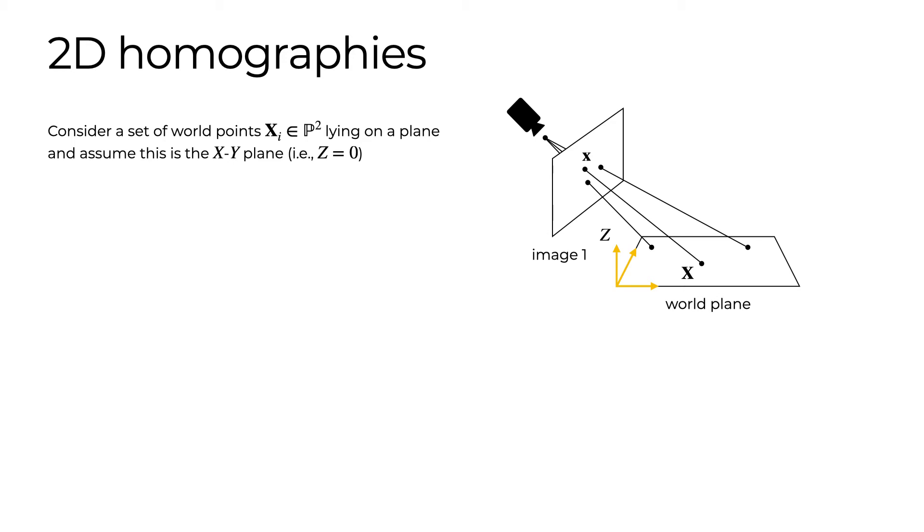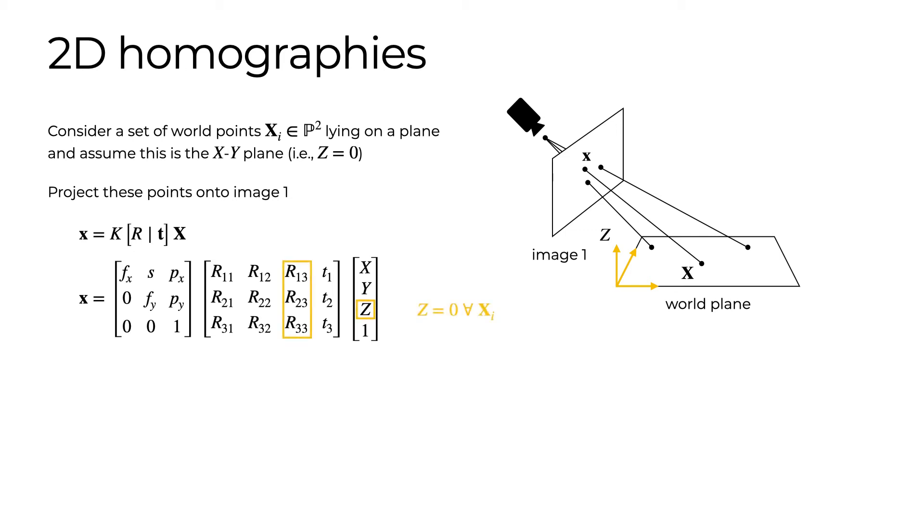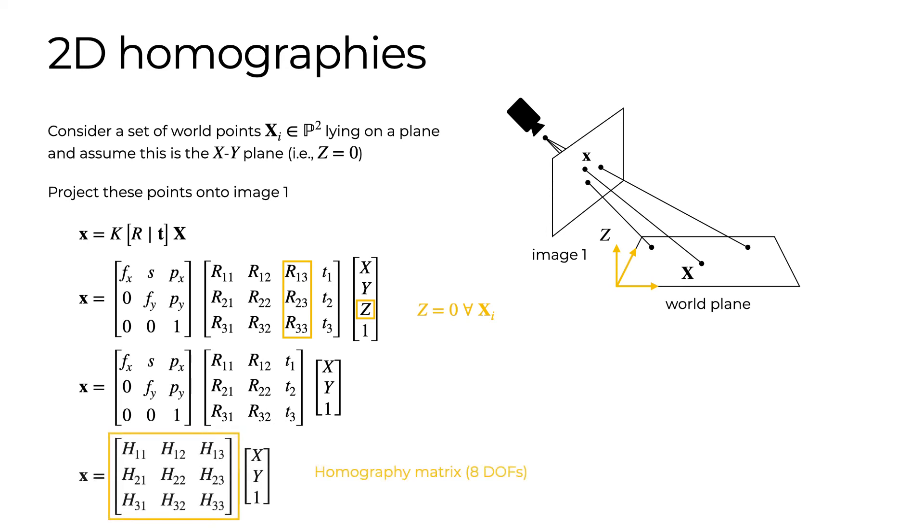As we have seen, the camera matrix relates the homogeneous coordinates of points in the world to their corresponding projection on the image plane. Since the world points lie on the xy plane, the z coordinate for each point is zero. Consequently, we could ignore the second-to-last column in the extrinsic matrix. Multiplying the two matrices gives rise to the 3x3 homography matrix. This transformation is defined up to scale, meaning that we can multiply it by any non-zero scalar without affecting the mapping between the two planes. Consequently, the homography matrix has 8 rather than 9 degrees of freedom.